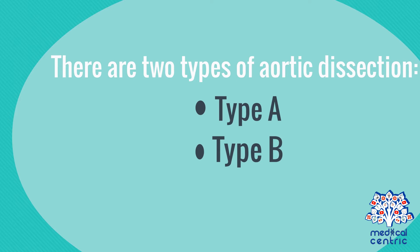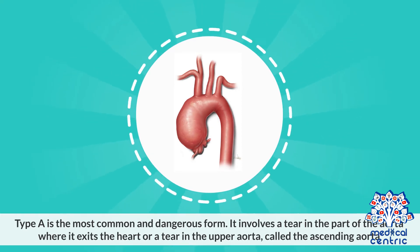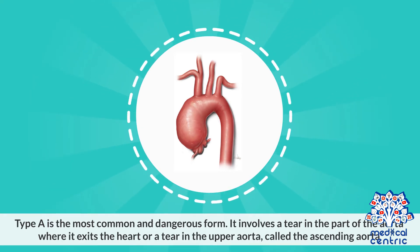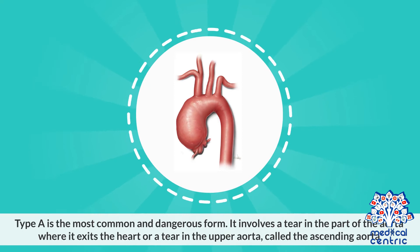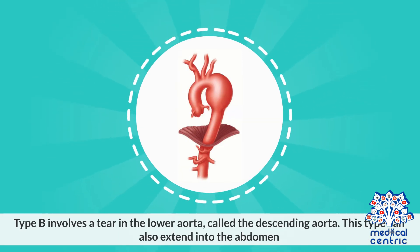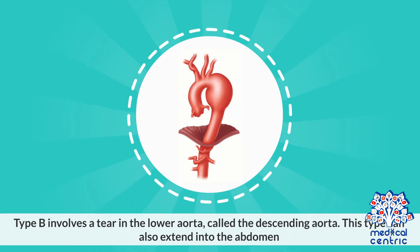There are two types of aortic dissection: type A and type B. Type A is the most common and dangerous form. It involves a tear in the part of the aorta where it exits the heart, or a tear in the upper aorta called the ascending aorta, and it can extend into the abdomen. Type B involves a tear in the lower aorta called the descending aorta, and this type can also extend into the abdomen.